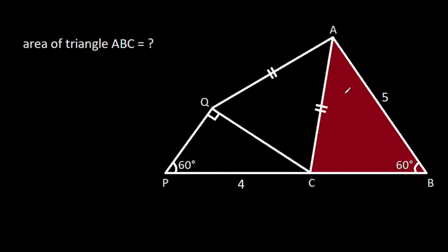In this video, we have been given that angle ABC is 60 degrees, angle CPQ is 60 degrees, angle CQP is 90 degrees, and AQ is equal to AC, and CP is 4, AB is 5. Then we have to find the area of triangle ABC.